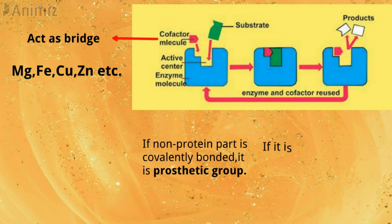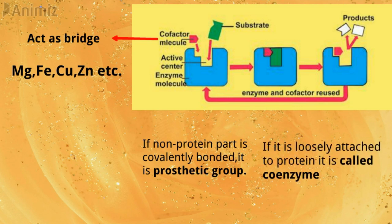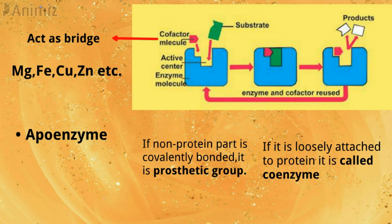If the non-protein part is covalently bonded, it is known as the prosthetic group. If it is loosely attached to the protein part, it is known as coenzyme. An enzyme with its coenzyme or prosthetic group removed is known as apoenzyme.